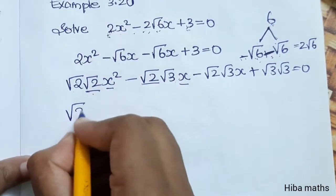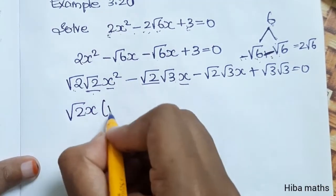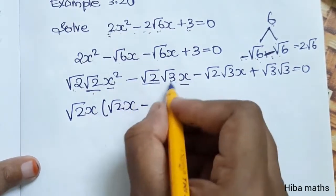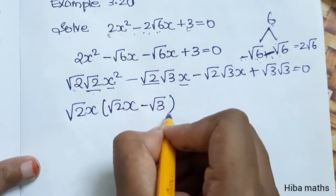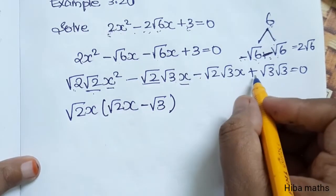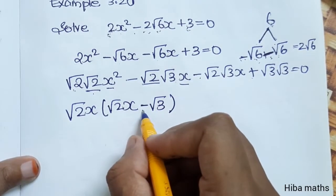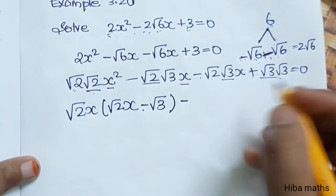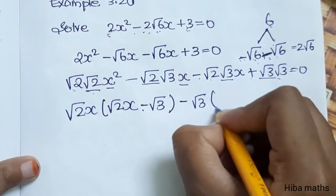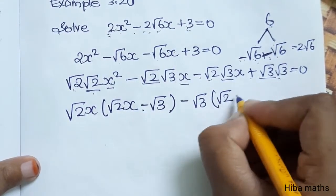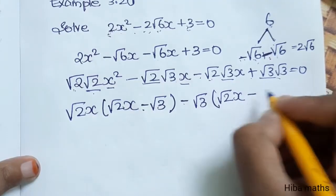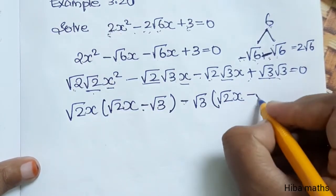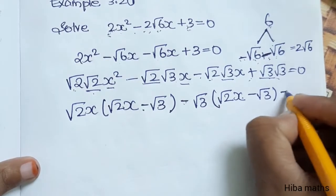Taking common factors: √2 and x give √2x. The balance here is √2x, and √3 is already present. There is a minus sign inside, so minus is common. Root √3 is common, √2 is common, and √3 is common.